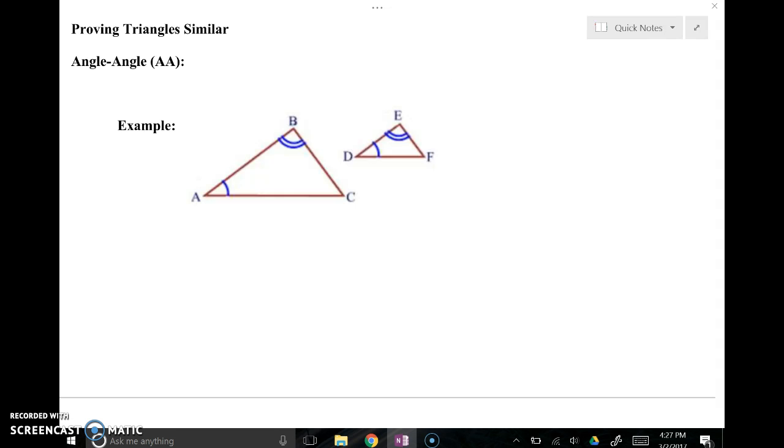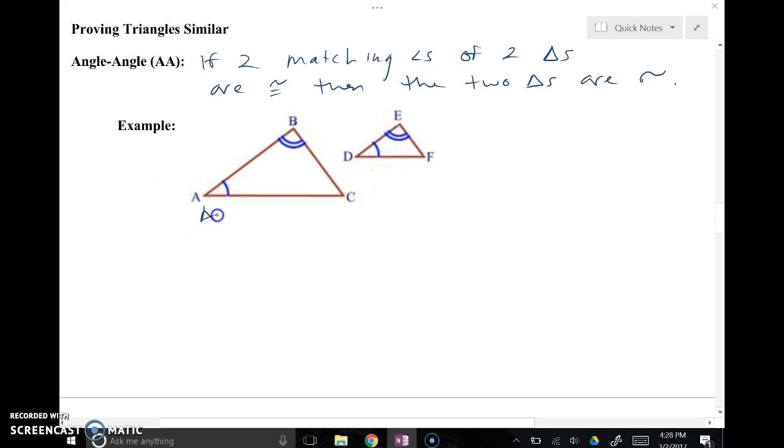Now I want to go through proving similarity with you. The first way of proving similarity, this is kind of like what we did when we were proving triangles congruent. We would love not to have to go through and show that all three pairs of matching sides are proportional and all three pairs of matching angles are congruent. So we have some shortcuts and the first of those shortcuts is angle angle. And what that means is if two matching angles of two triangles are congruent, then the two triangles are similar. So what we've got here is angle A and angle D are congruent. That's one pair. And angle B and angle E are congruent. So that's the second pair. So that's what angle angle similarity looks like.